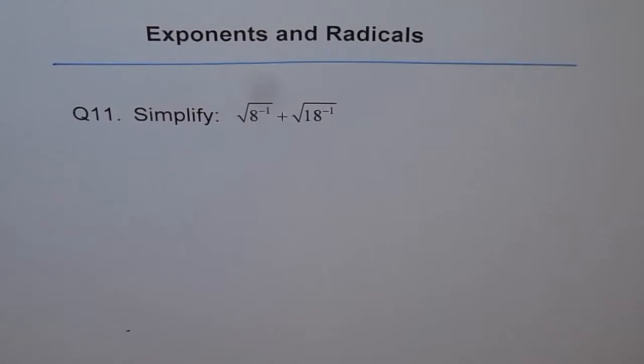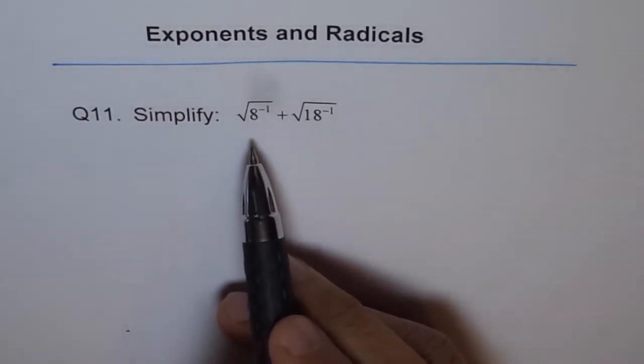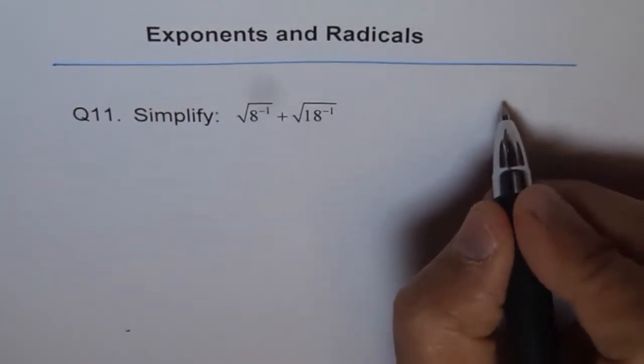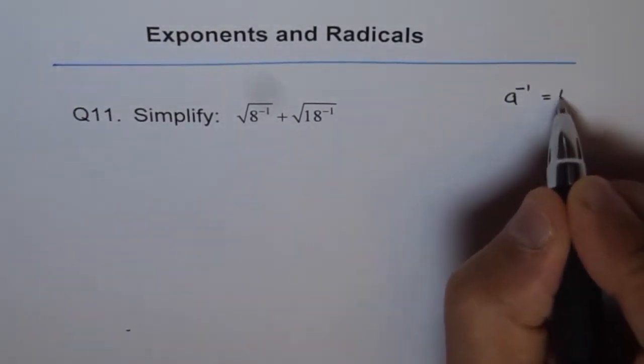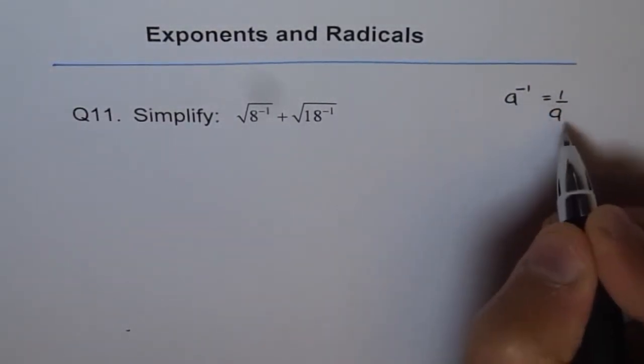So now I am introducing you to negative 1 exponent. Negative 1 is like reciprocal. If you have a to the power of minus 1, it means 1 over a. That is how you have to see this. So 8 to the power of minus 1 is 1 over 8.